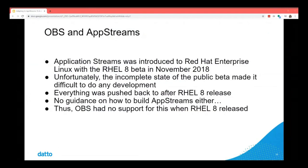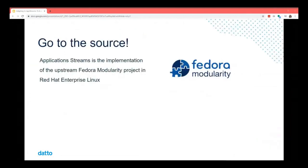After the release, there wasn't really any guidance on how to build things with app streams or to build app streams themselves — so there was no support for it because nobody really knew how to do anything with it yet. In order to get there, we had to go to the source. Application streams is actually the implementation of the upstream Fedora modularity project in Red Hat Enterprise Linux.